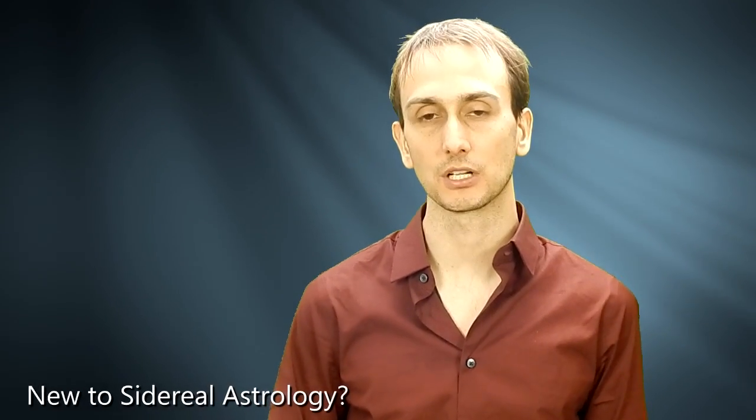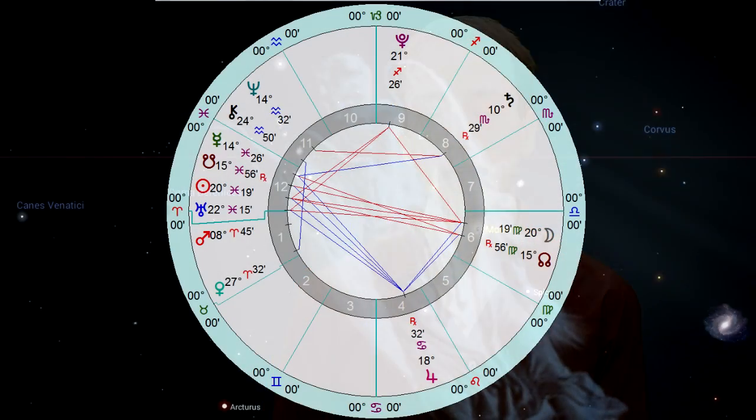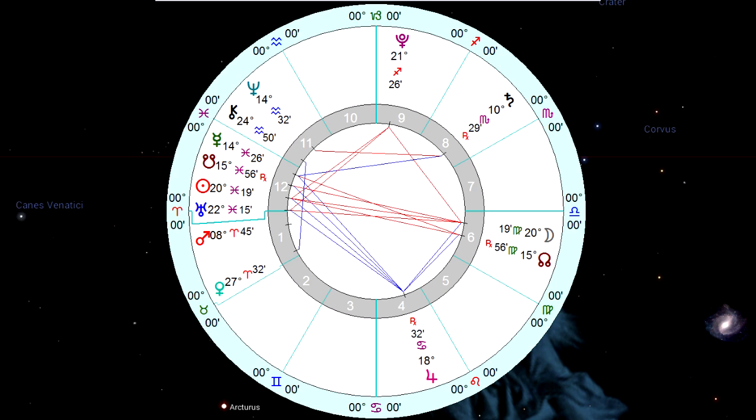We have the very transformative lunar eclipse here in Virgo coming up on Saturday in the morning for those of us in America, in the evening of Friday night for the rest of the world. This is a lunar eclipse that's happening very close to this Uranus-Pluto activity, and it's very active.